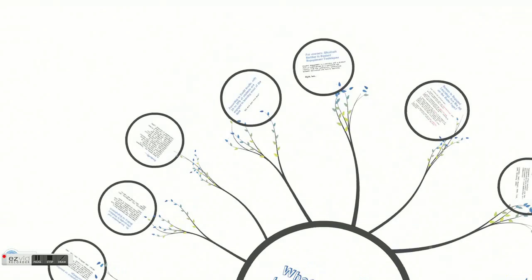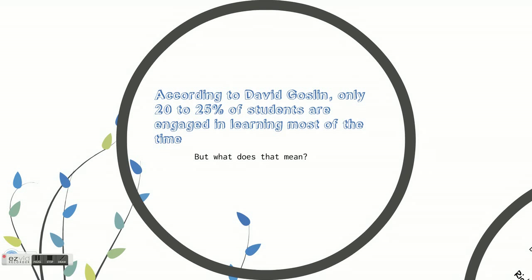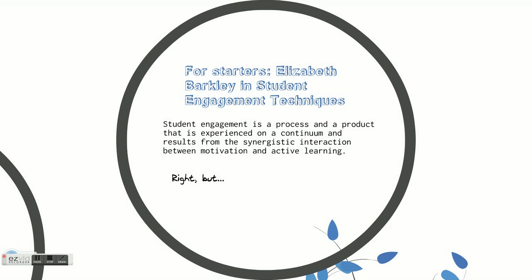Let's start out by looking at a statement by David Gosselin. He notes that 20 to 25 percent of students are engaged in learning most of the time. But what exactly does that mean? Well, for starters, let's look at the definition of Elizabeth Barclay in the book Student Engagement Techniques. Barclay states: student engagement is a process and a product that is experienced on a continuum and results from synergistic interaction between motivation and active learning. But what exactly does that mean?